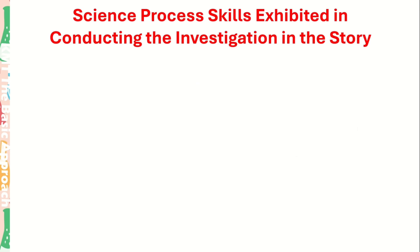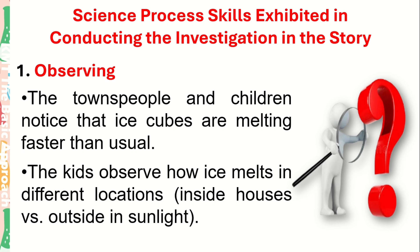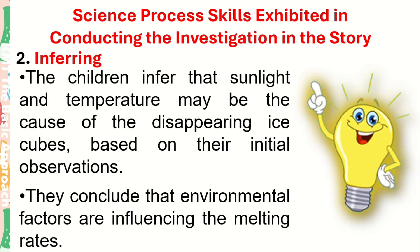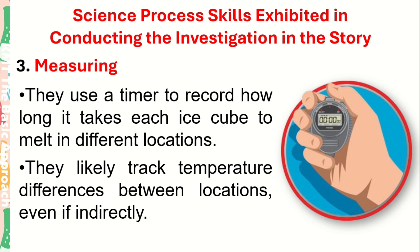Let us now understand the science process skills exhibited in the story. Number 1 — Observing: the townspeople and children noticed that ice cubes are melting faster than usual; the kids observed how ice melts in different locations, like inside houses versus outside in sunlight. Number 2 — Inferring: the children inferred that sunlight and temperature may be the cause, based on their initial observations. They concluded that environmental factors are influencing the melting rates. Number 3 — Measuring: they used a timer to record how long it took each ice cube to melt in different locations and tracked temperature differences between locations.